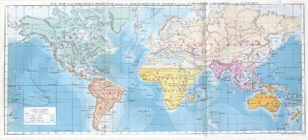Phytogeography is the branch of biogeography that studies the distribution of plants. Zoogeography is the branch that studies the distribution of animals.